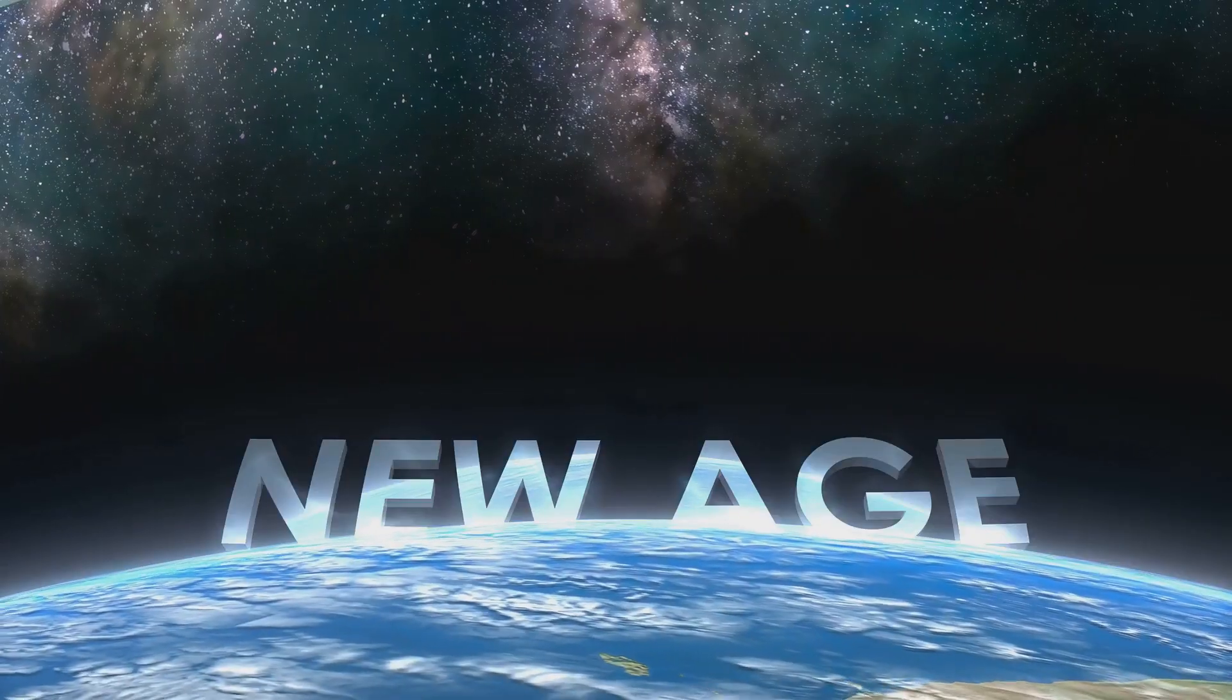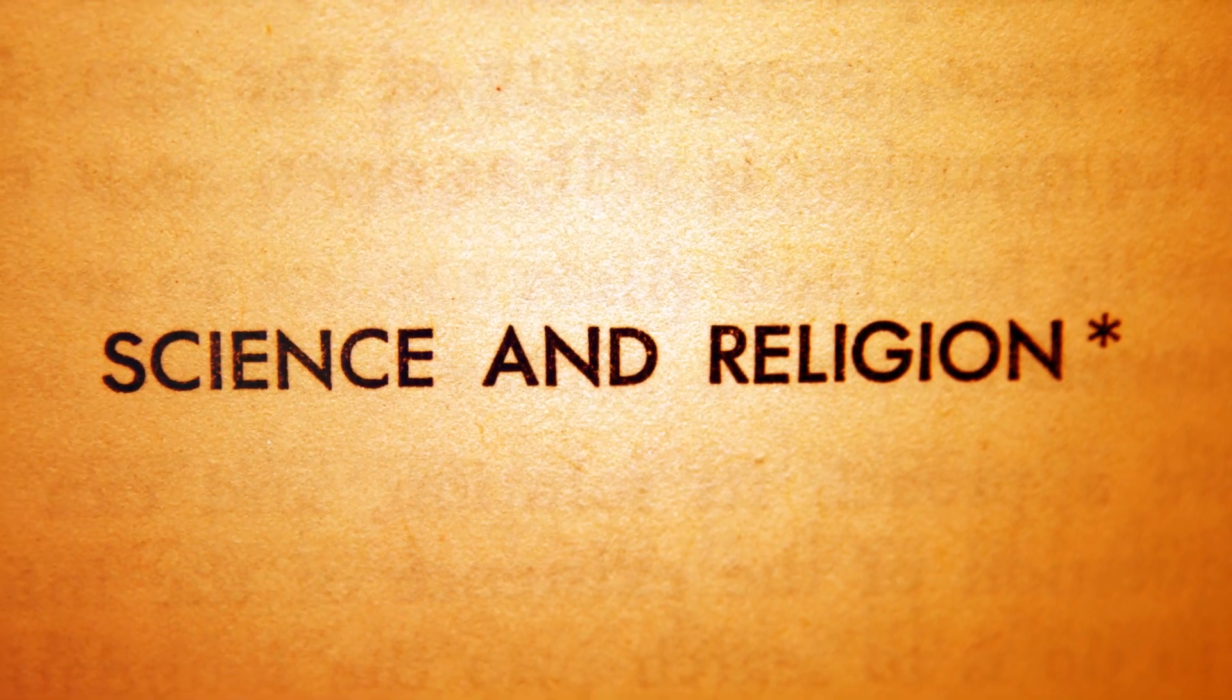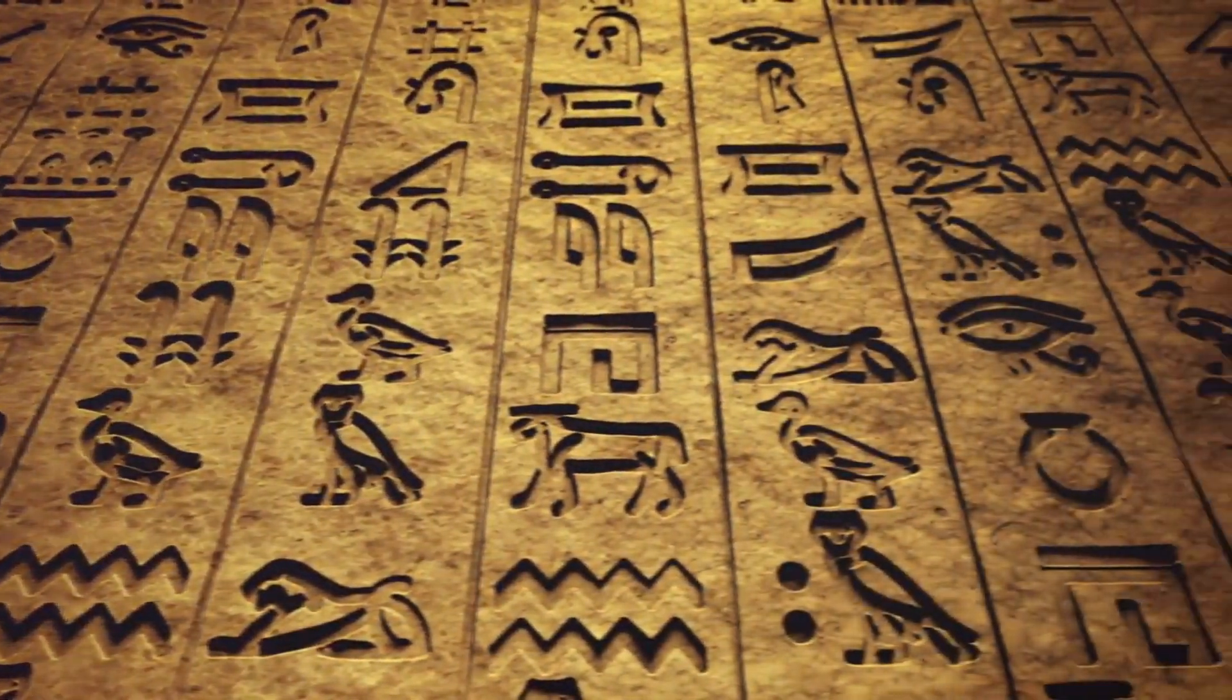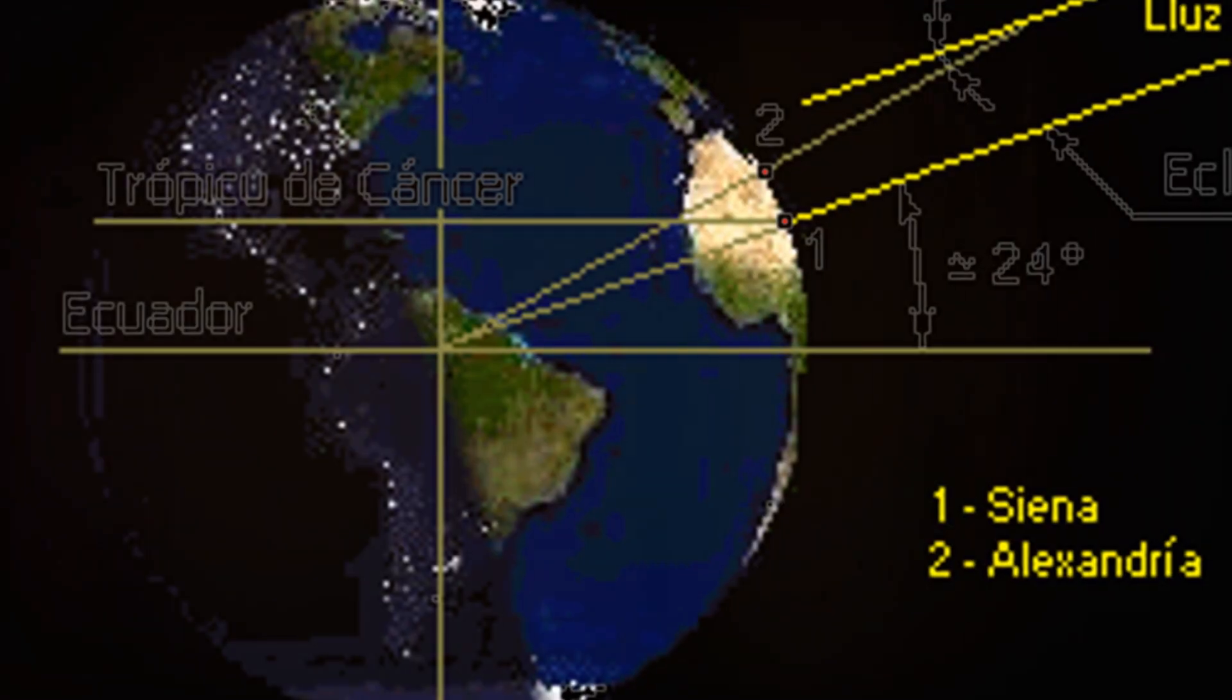However, it was early astronomers such as Eratosthenes who first proposed the idea of a spherical Earth, altering our understanding for eternity. Eratosthenes, in fact, made groundbreaking discoveries in this regard.